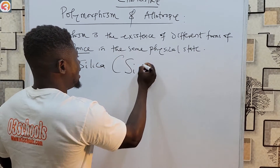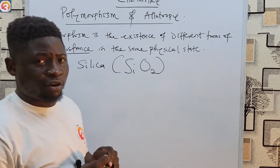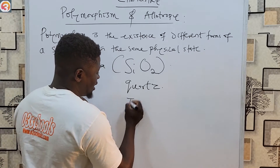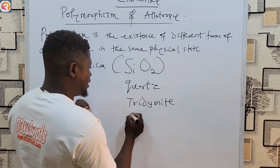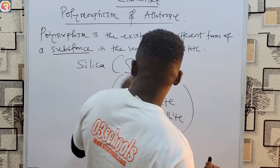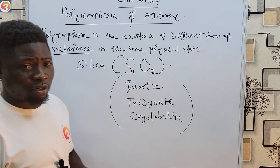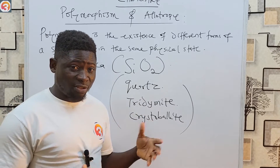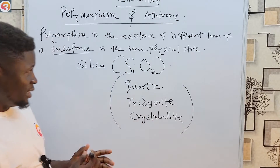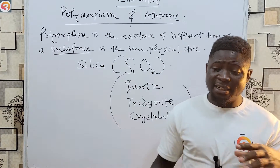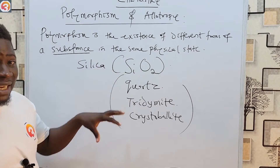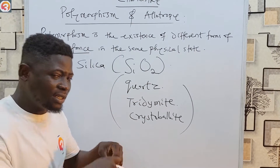An example of polymorphism is silica, SiO₂. Silica has three crystalline forms: quartz, tridymite, and cristobalite. These are known as polymorphs of silica. Note that silica is not an element — it's a compound, SiO₂. So polymorphism describes different forms of the same substance in the same physical state.